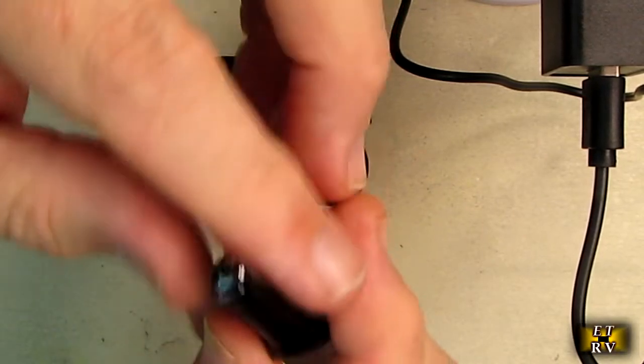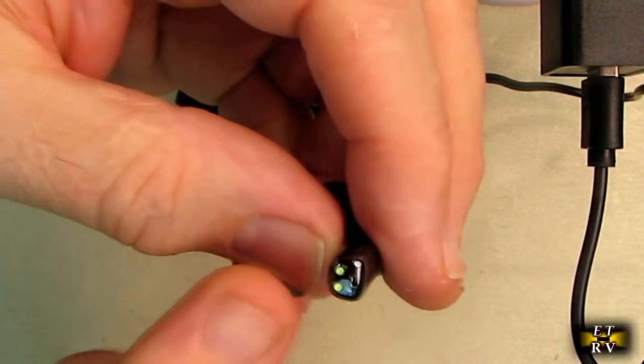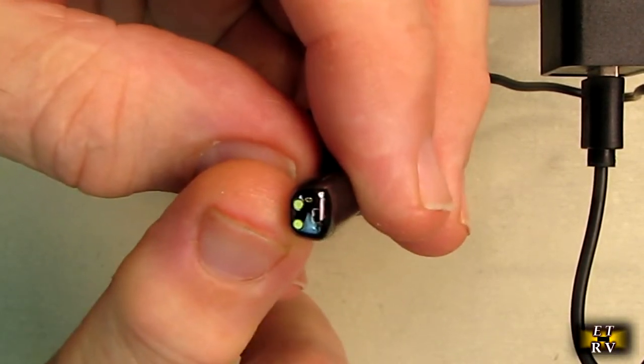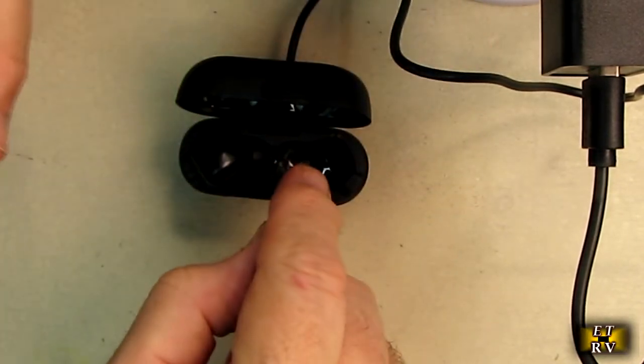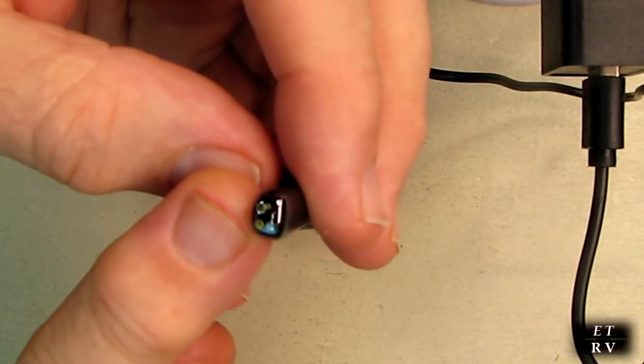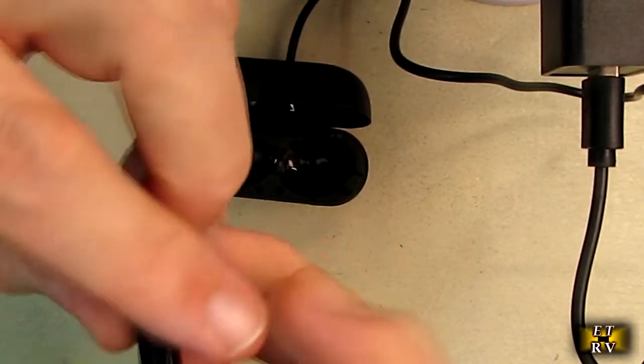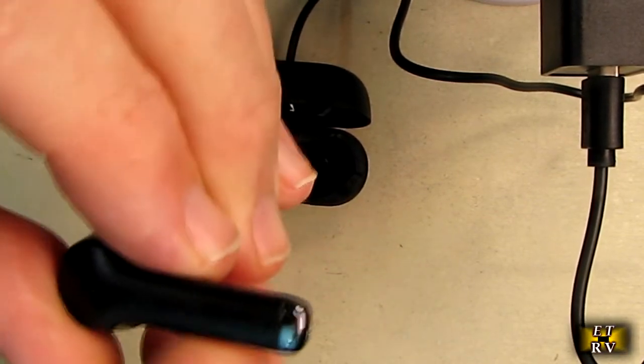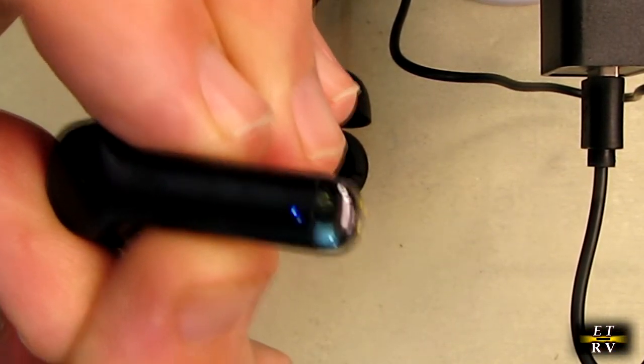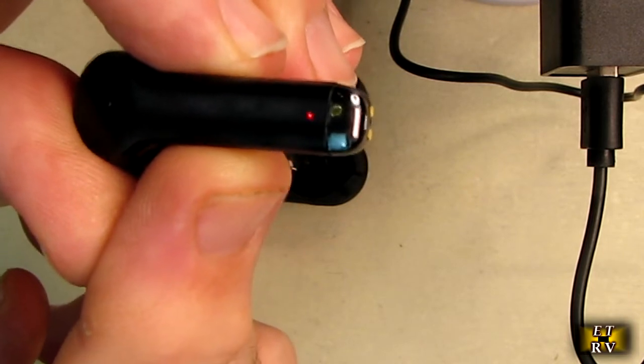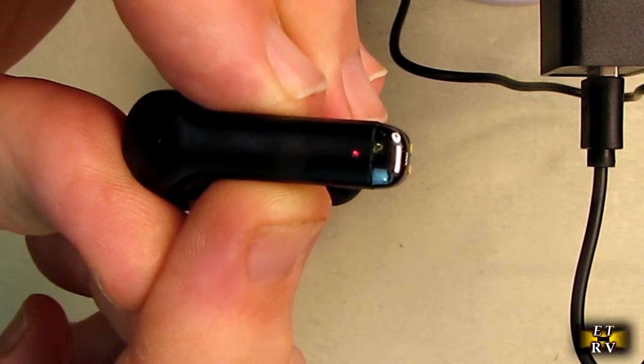On the bottom you can see the little gold contacts that receive energy from the charging station. If you look closely, you'll see a blinking LED that's actually trying to connect to my Pixel 6.